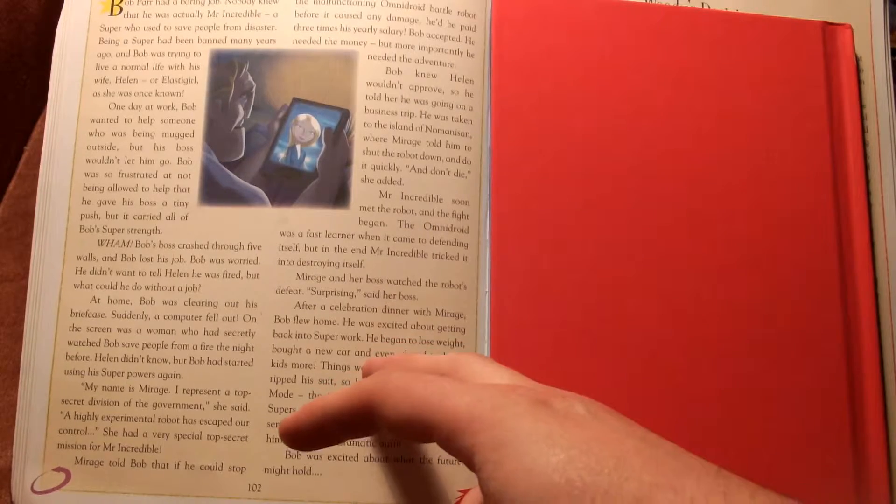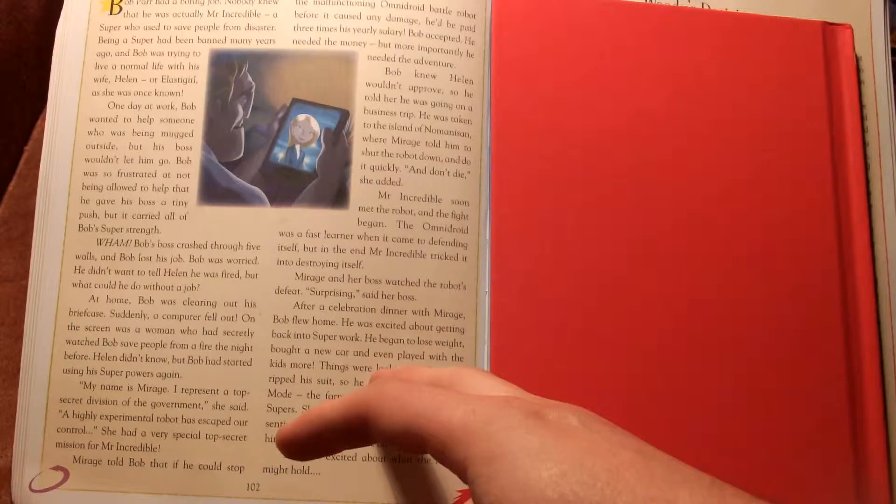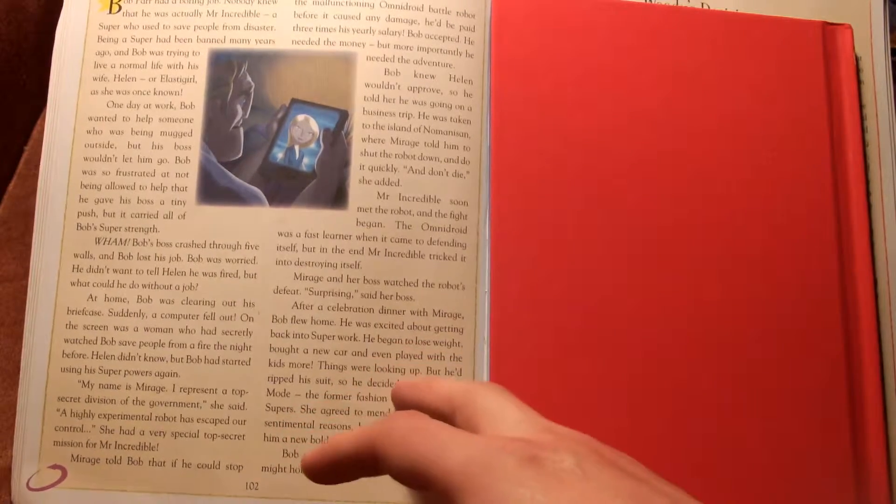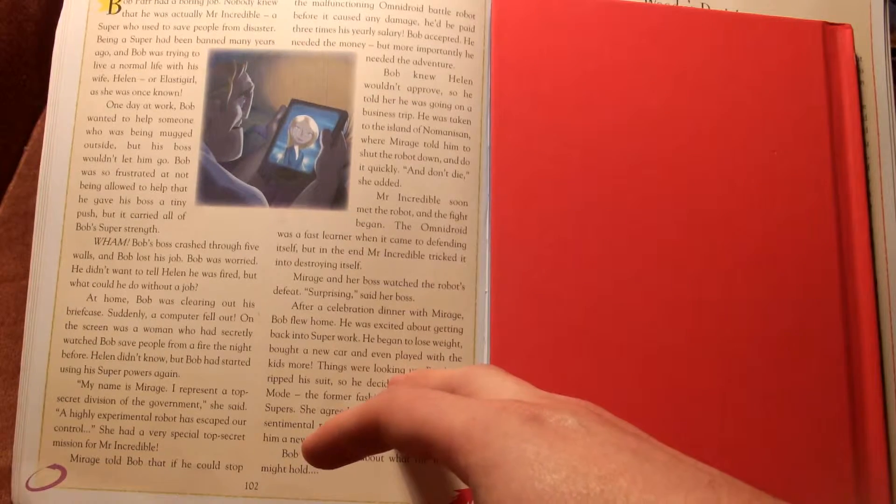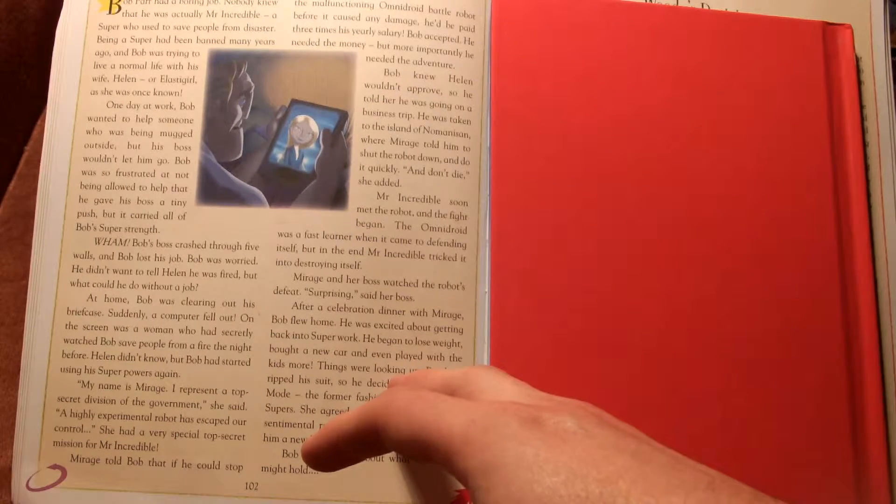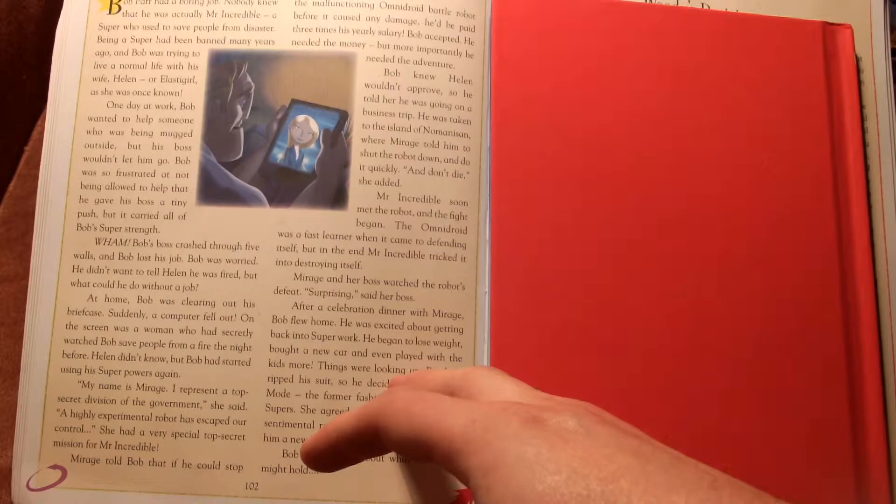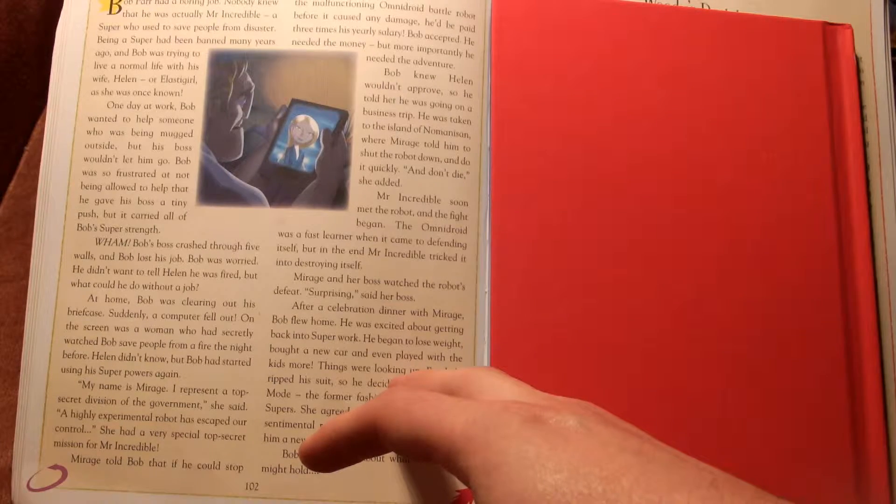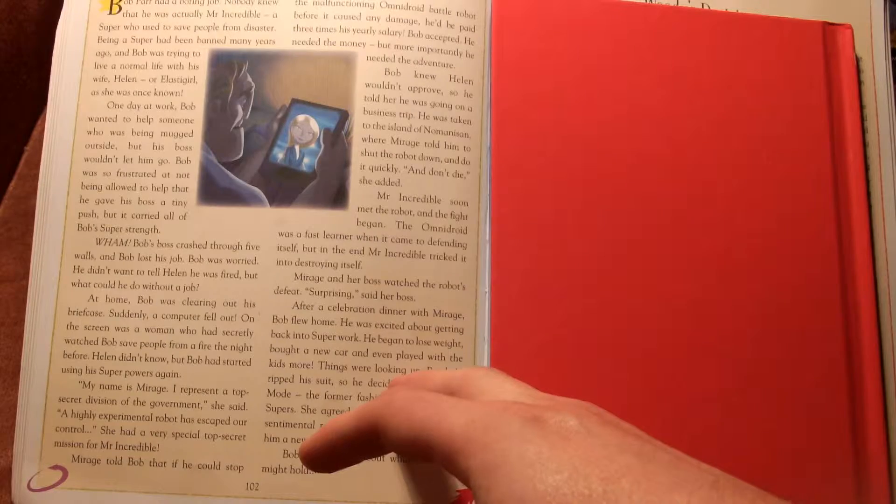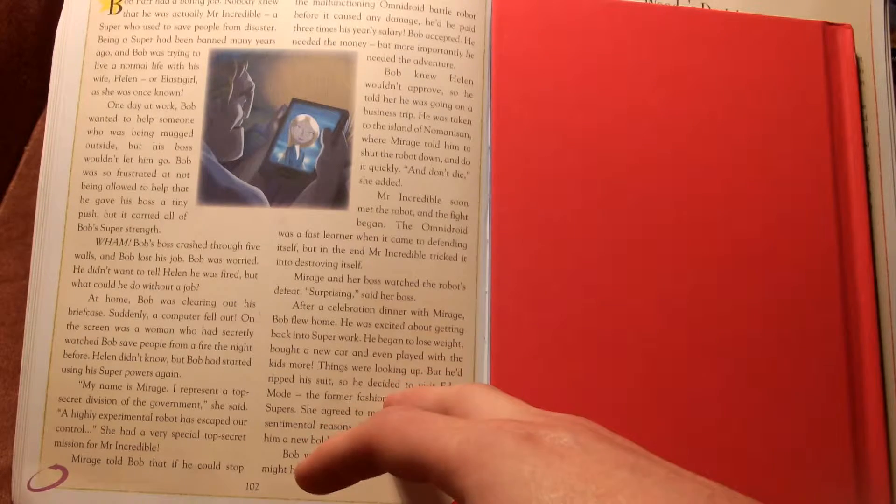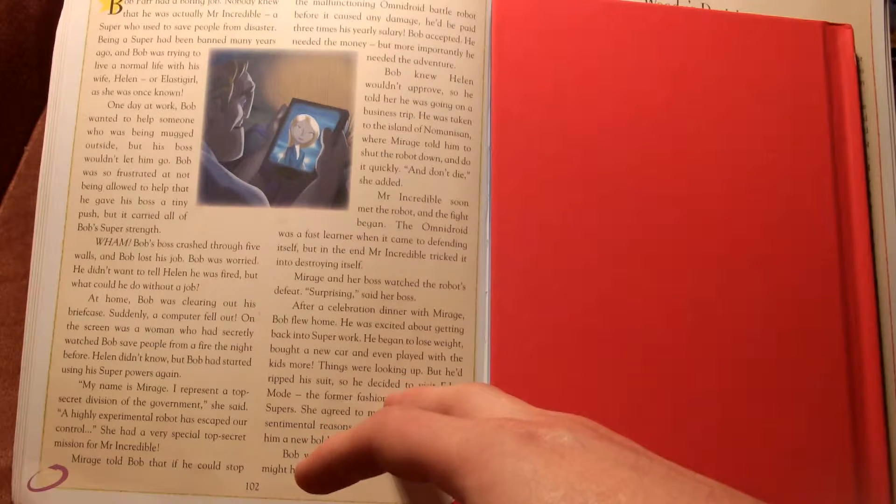Bob was worried. He didn't want to tell Helen he was fired but what could he do without a job? At home Bob was clearing out his briefcase. Suddenly a computer fell out. On the screen was a woman who had secretly watched Bob save people from a fire the night before. Helen didn't know but Bob had started using his superpowers again.